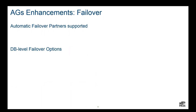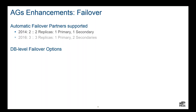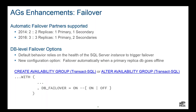For failover enhancements: automatic failover partners supported has been increased to up to three replicas. Previously, automatic failover could only be done with one primary and one secondary. SQL Server 2016, releasing June 1st, supports automatic failover for up to three replicas. Also, DB-level failover now provides more granular support — not just relying on the instance to fail over, but you can trigger failover if a specific database becomes unavailable.